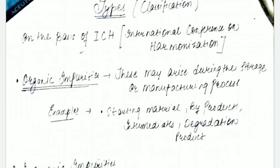Let's talk about organic impurities. These can arise when you're storing or manufacturing the product. Examples include starting raw materials, byproducts, intermediates, and degradation products.